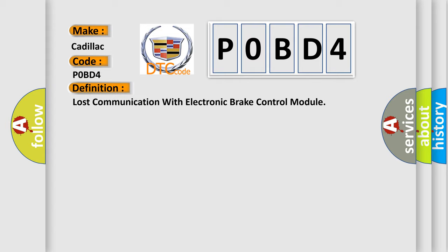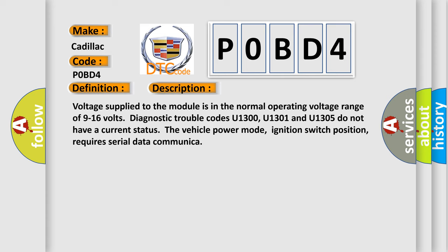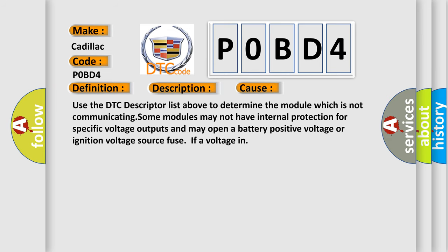Here is a short description of this DTC code. Voltage supplied to the module is in the normal operating voltage range of 9 to 16 volts. Diagnostic trouble codes U1300, U1301, and U1305 do not have a current status. The vehicle power mode and ignition switch position require serial data communication. This diagnostic error occurs most often in these cases. Use the DTC descriptor list to determine the module which is not communicating. Some modules may not have internal protection for specific voltage outputs and may open a battery positive voltage or ignition voltage source fuse if voltage is introduced.